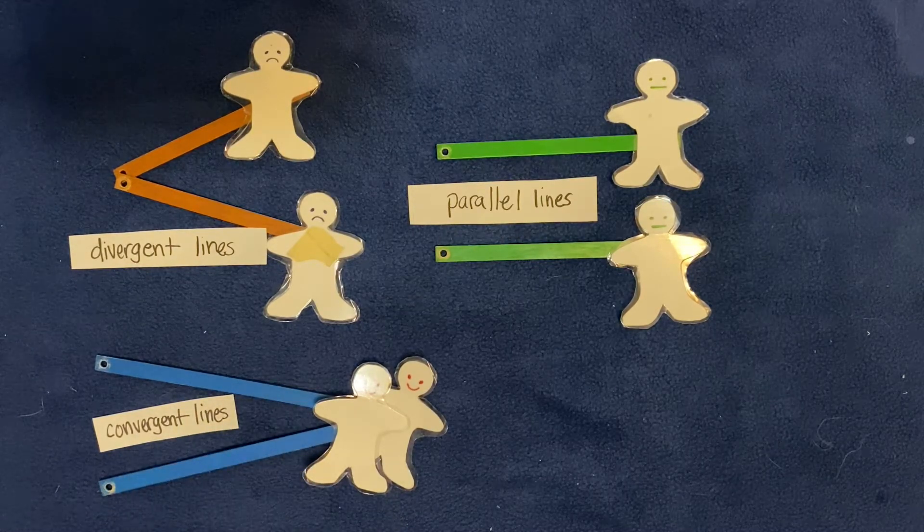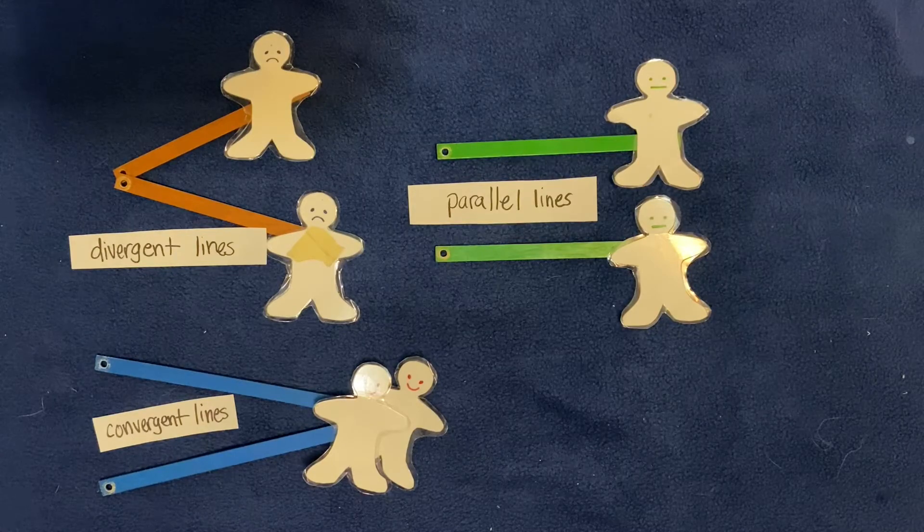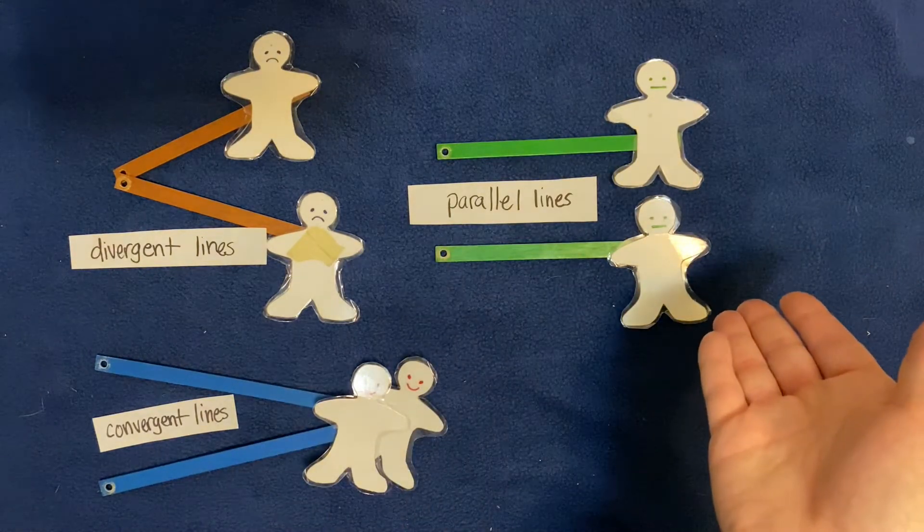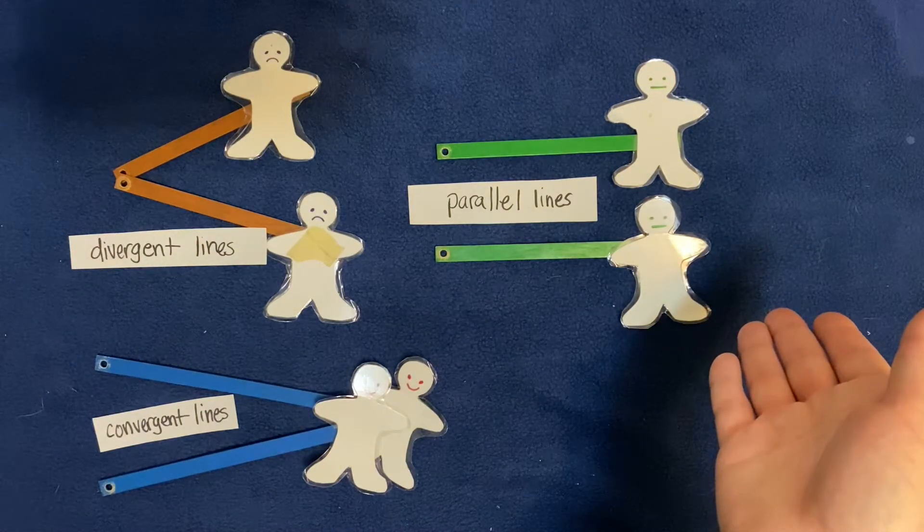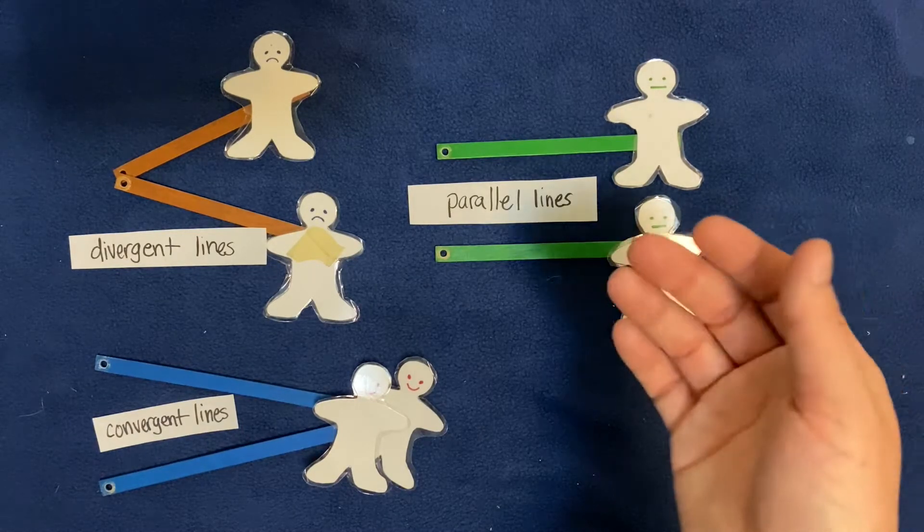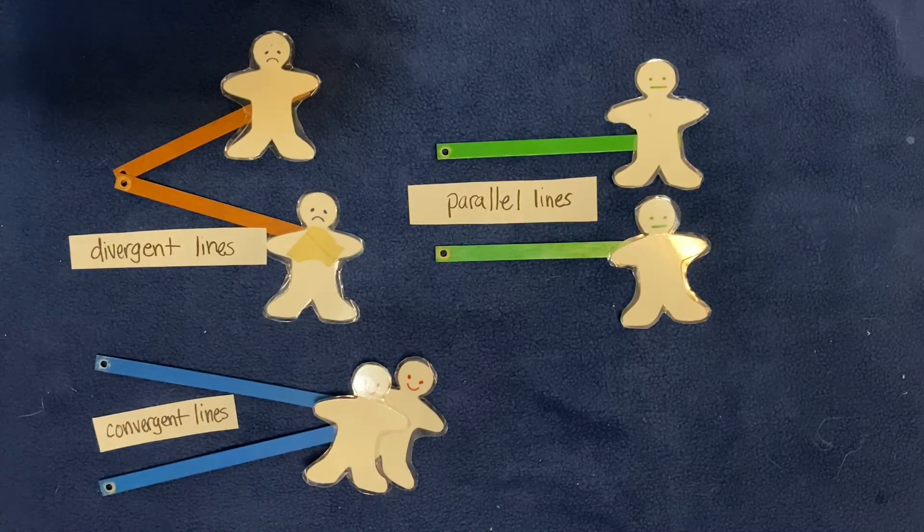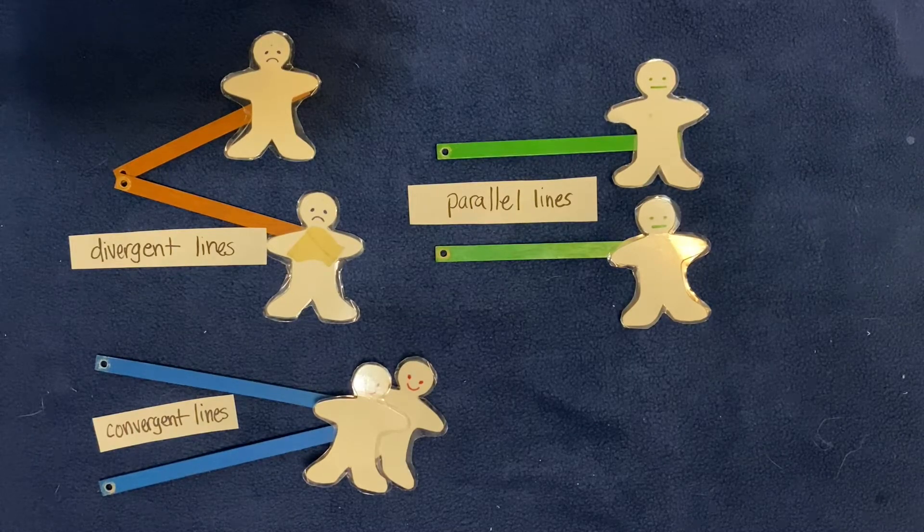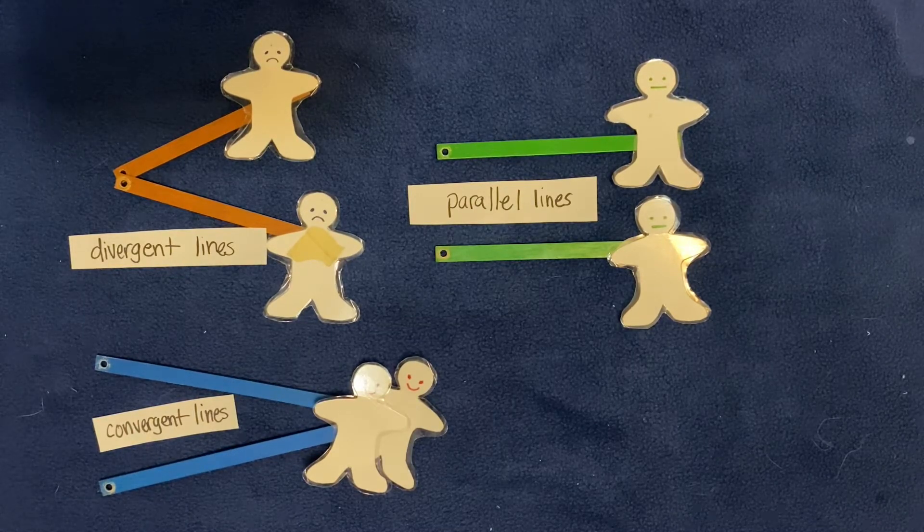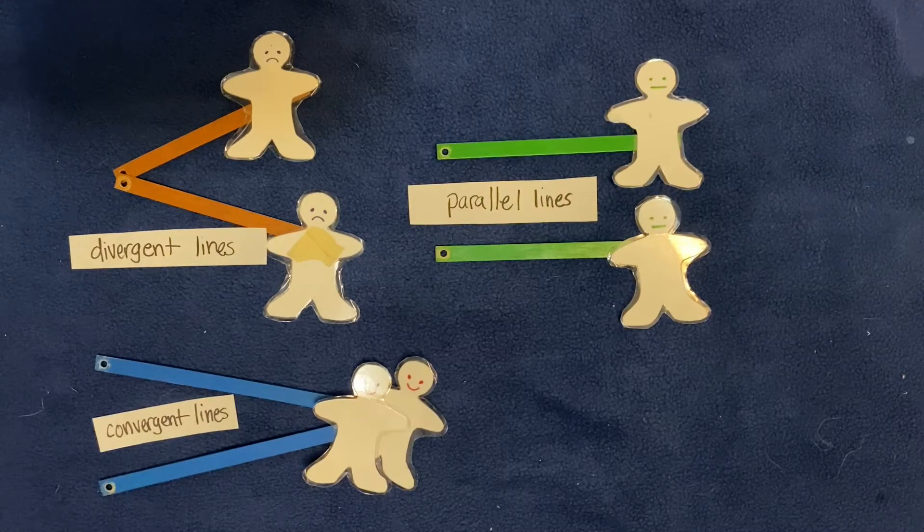Maybe you want to make your own sticks with labels and little people—happy people, sad people, and aloof people. You know, they're chilling, they're fine. But I want you to see if you can do something with it because these are important geometric principles. All right guys, thank you so much. Talk to you later!